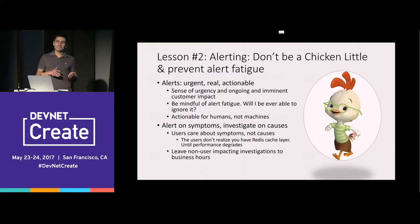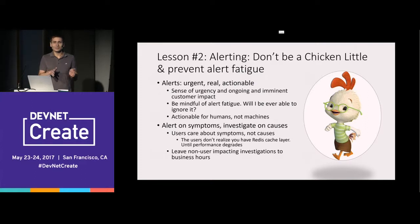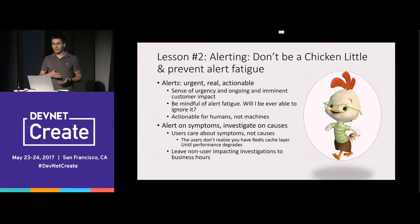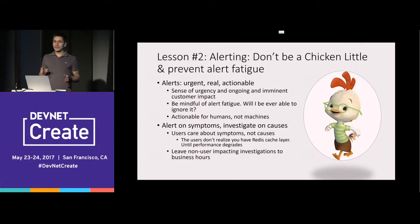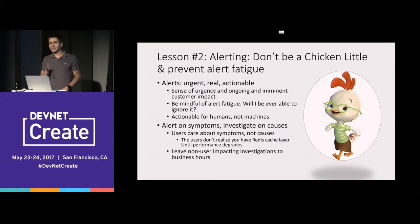Another important question: are we waking someone up for something that could have been automated? Actionable means it requires human intelligence. If it can be automated, why isn't it? It might be on the backlog, but we need to be thinking about this. Also, we should alert on symptoms, not causes — the question to ask is: what is the impact on users?